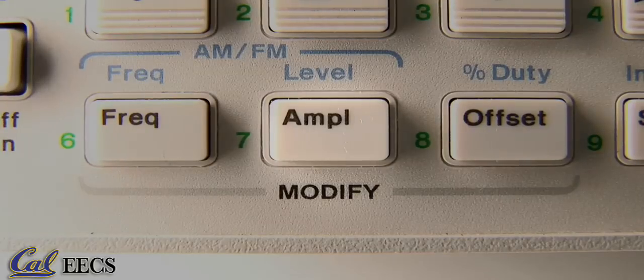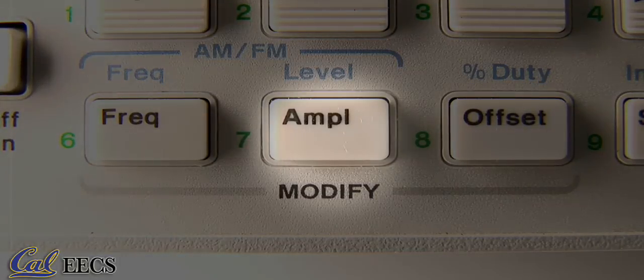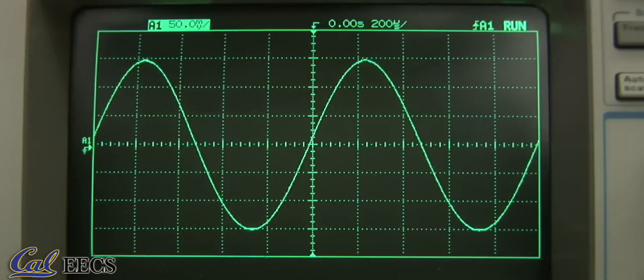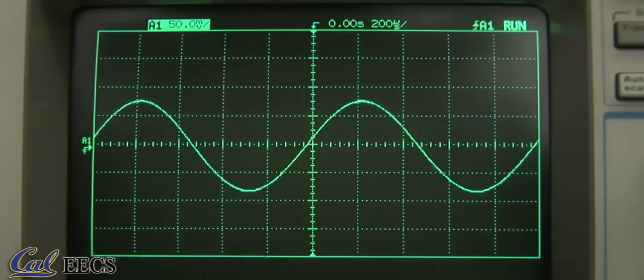The next thing we change is the amplitude. Press the amplitude button here and then change the value in the same manner that you change the frequency. You can see here on the oscilloscope what raising and lowering the amplitude does to the waveform.